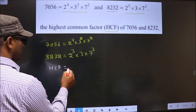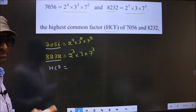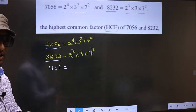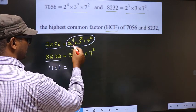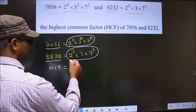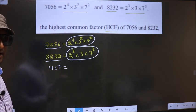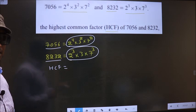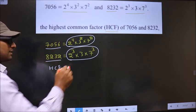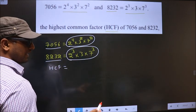HCF of this and this will be the product of numbers that are present here and also here. We should find the numbers that are present in these two places. Let us find.